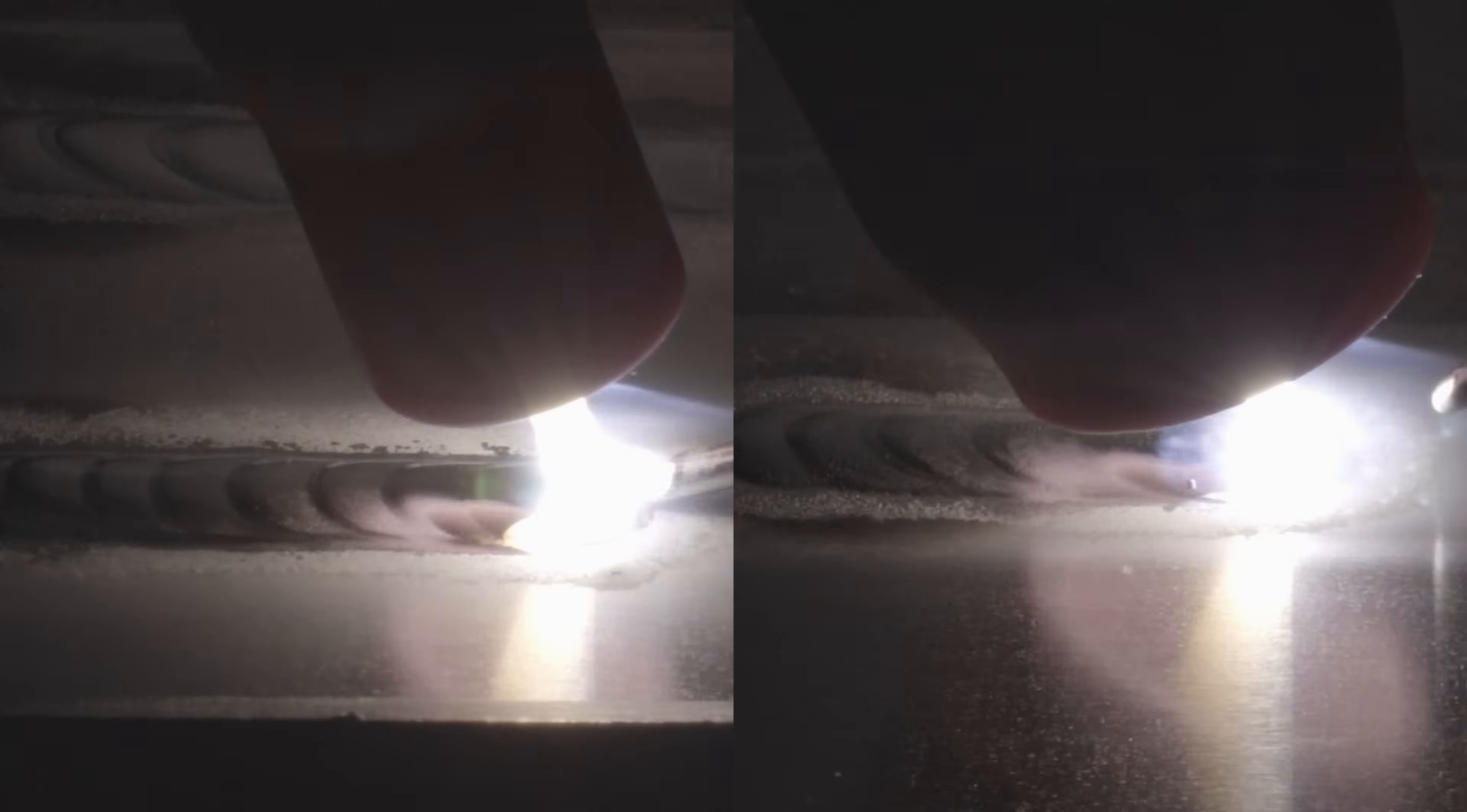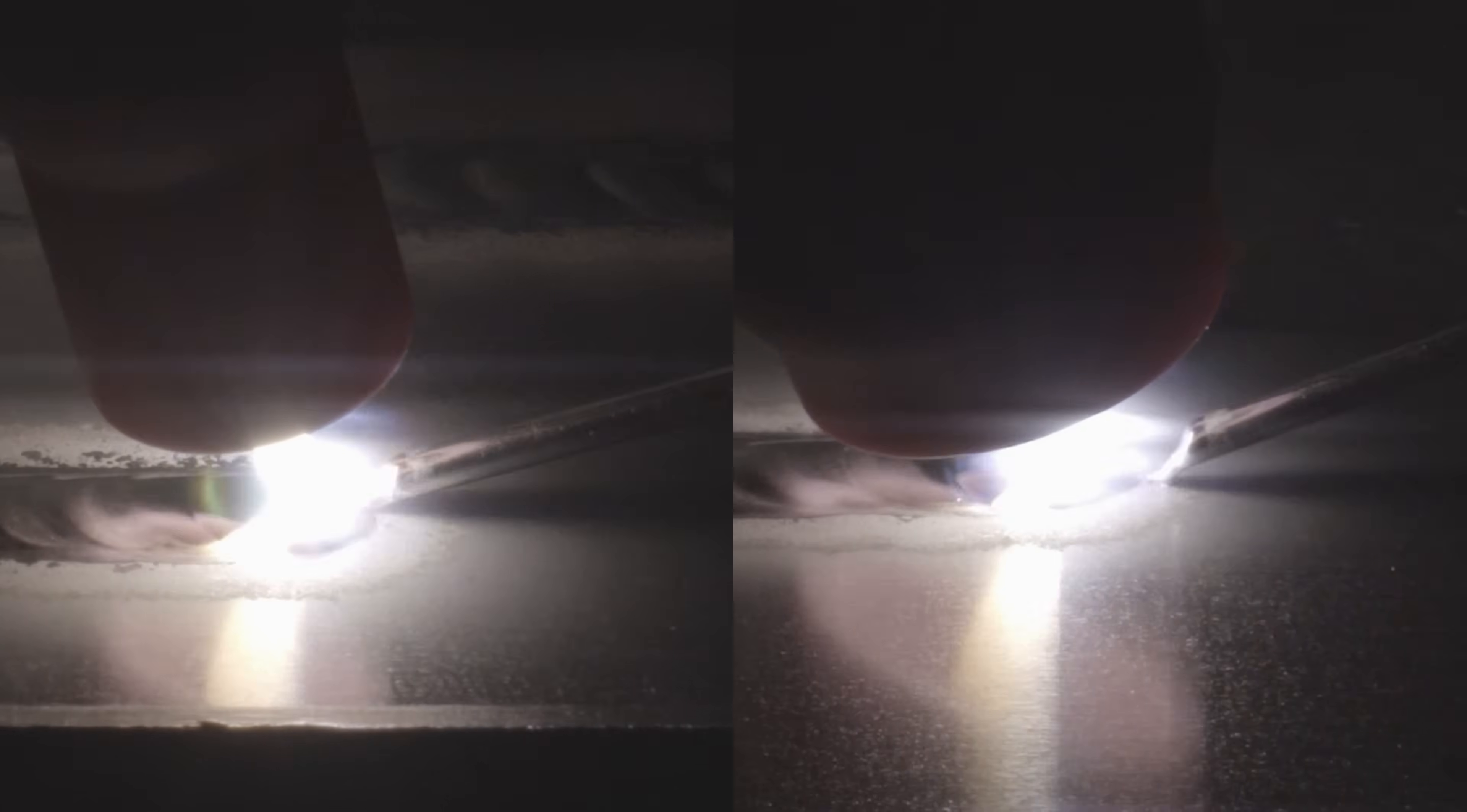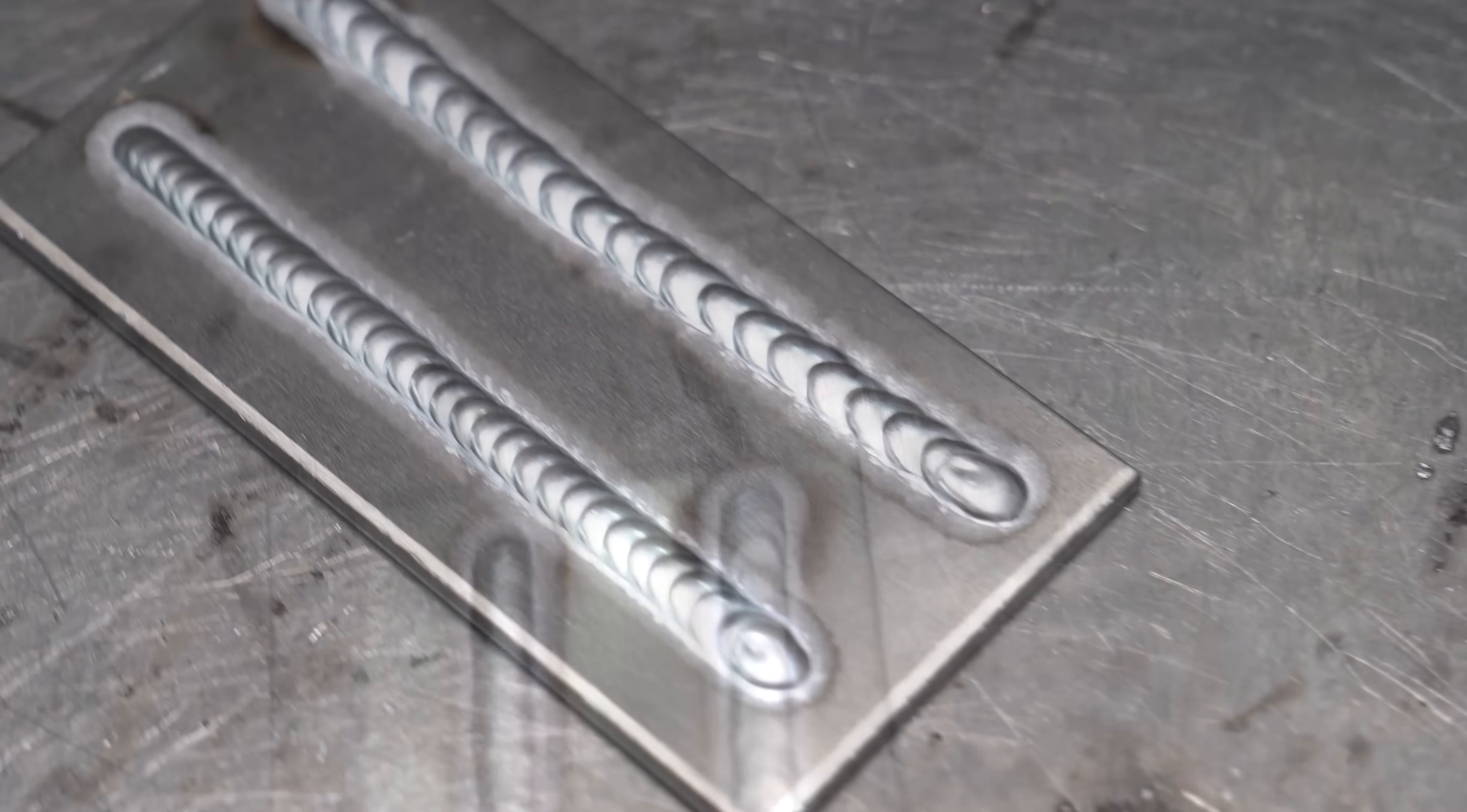On your left is the number five standard, pumping at about 12 CFH. On your right is the number eight gas lens, pumping at about 20 CFH. Both setups are on the same machine, using the exact same settings and the exact same technique and the exact same tungsten. Absolutely nothing changed between these two runs except for the amount of argon coverage.